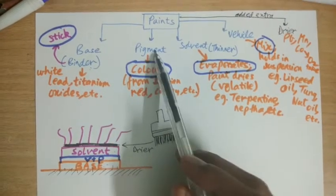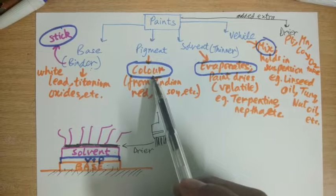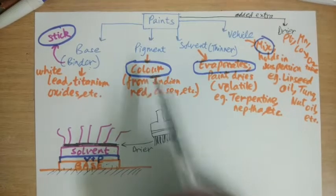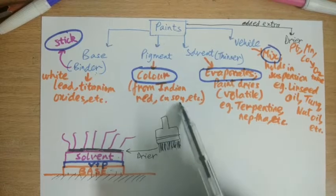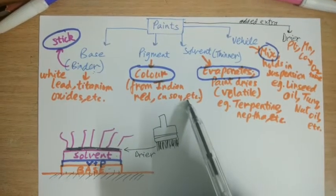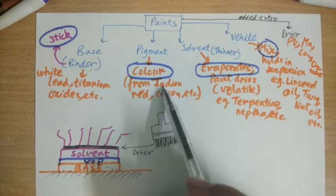Moving on to next component is pigment. Pigment adds color. We have different colors of paints, from Indian red, copper sulphate, various color-giving pigments. So pigment is just for color.